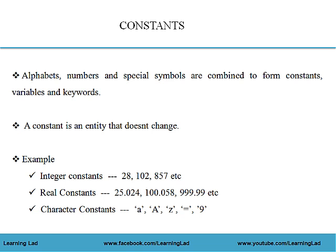An integer constant is a whole number like 28, 102 or 857. The real constants are the numbers with a decimal value — it may be like 25.024 or 100.05, etc.